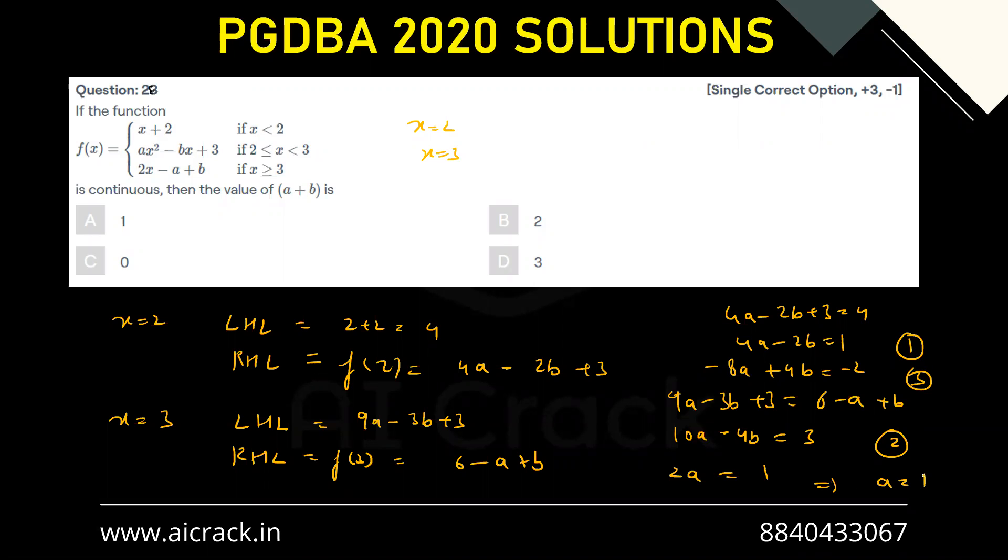That is a equals to half. Now if I plug this value in the first equation, I'll be getting 4a, basically 2 minus 2b equals to 1, I'll be getting b equals to half. So a plus b would be 1 - a is the correct answer.